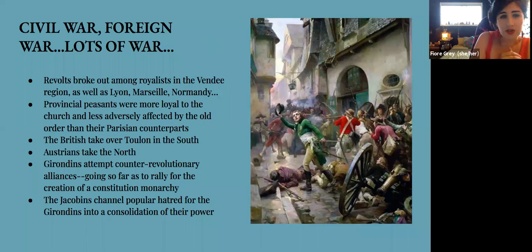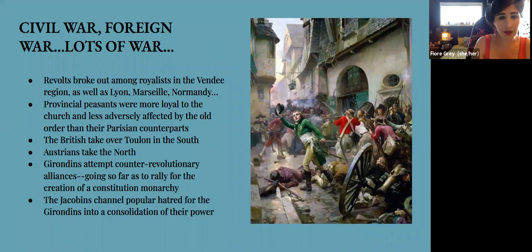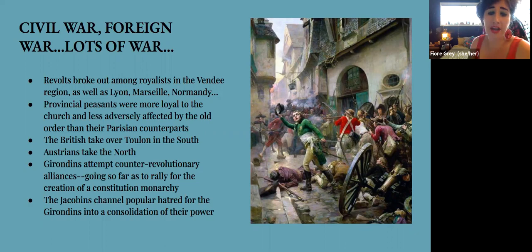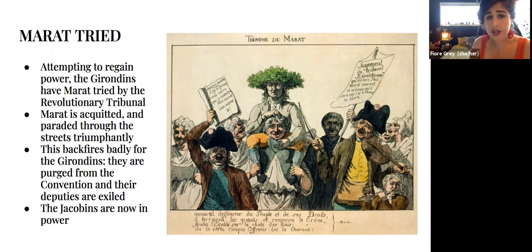Revolts broke out among royalists in the Vendée region, as well as Lyon, Marseille, and Normandy. Many provincial peasants were more loyal to the church and less adversely affected by the old order than their Parisian counterparts, so they sided with the royalists. The British took Toulon in the south, the Austrians took the north. The Girondins attempted counter-revolutionary alliances and even rallied for a constitutional monarchy. The Jacobins channeled popular hatred for the Girondins into consolidating their power. The Girondins then tried to put Marat on trial before the revolutionary tribunal — Marat was, of course, acquitted and wildly popular, paraded through the streets triumphantly. This totally backfired: the Girondins were purged from the convention, their deputies exiled, and the Jacobins were now firmly in power.